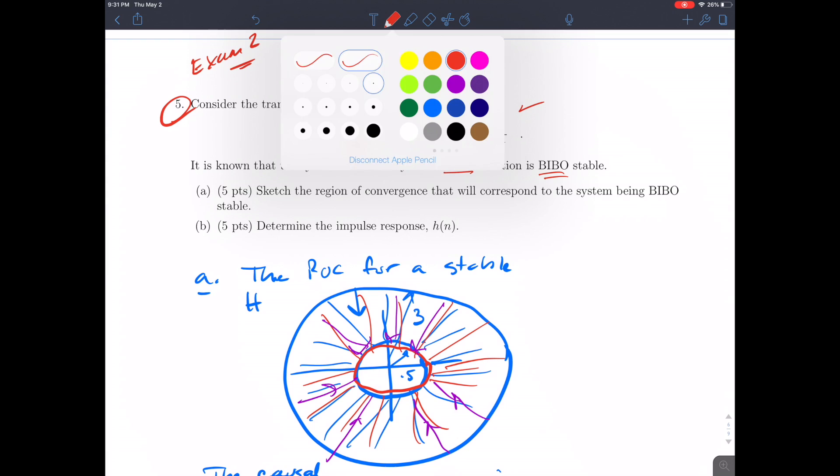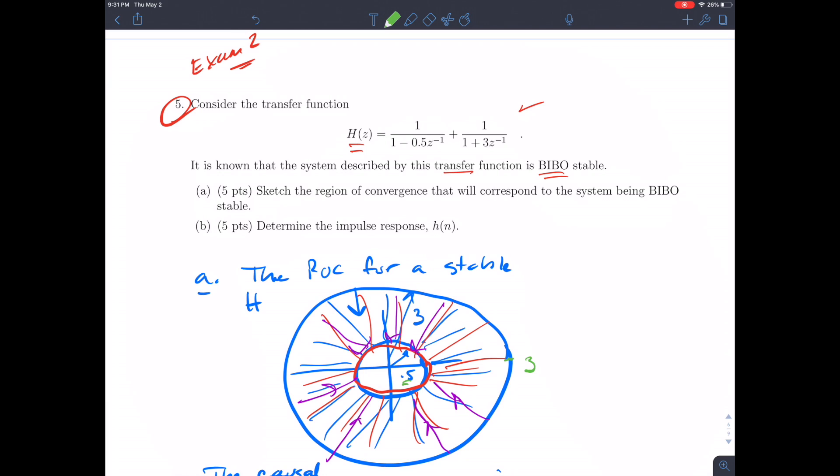What that means is that the unit circle—and here's 0.5 right here, and here's 3 right here—the unit circle is in here, and the unit circle is contained in the region of convergence.